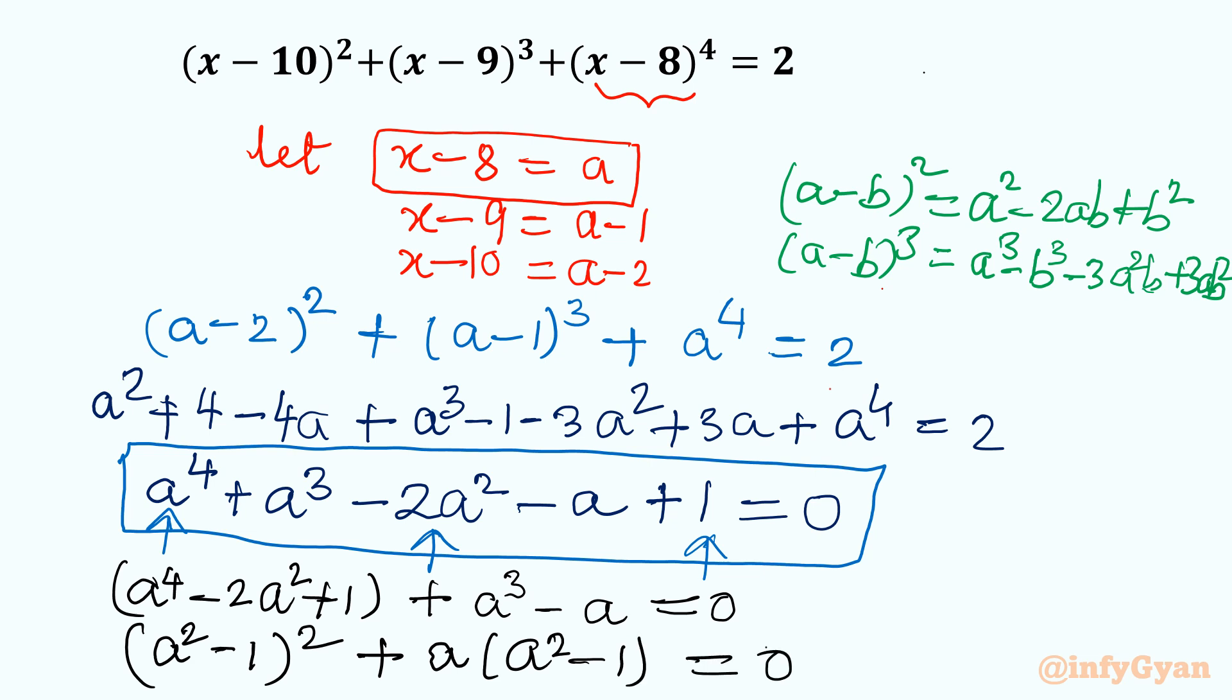Now see, a² - 1 is there, a² - 1 is there, I will take completely common a² - 1. So what will be left? If I will take a² - 1 common, then from first term I will write a² - 1, and last term I will write only a equal to 0.